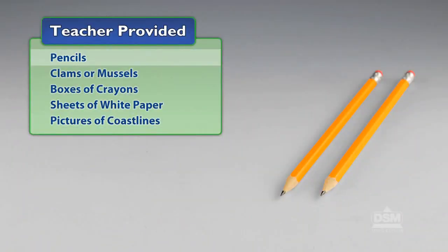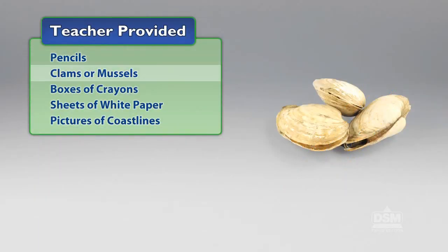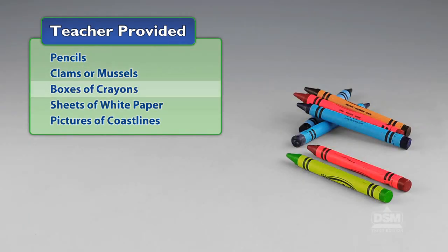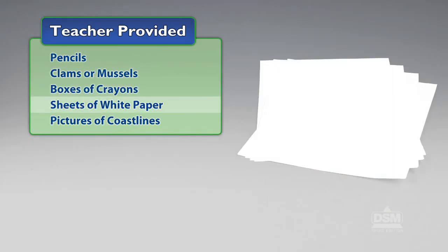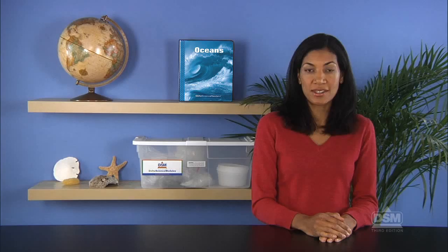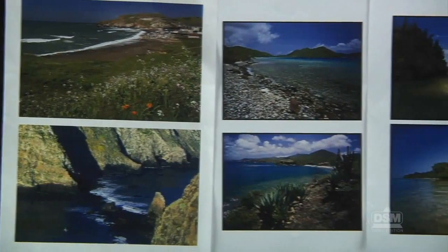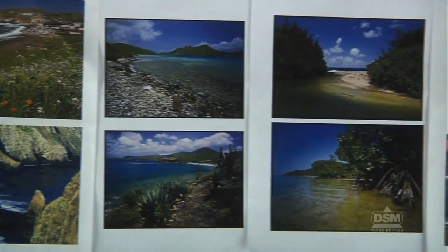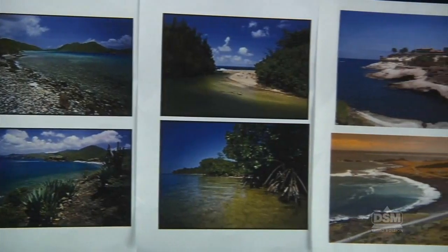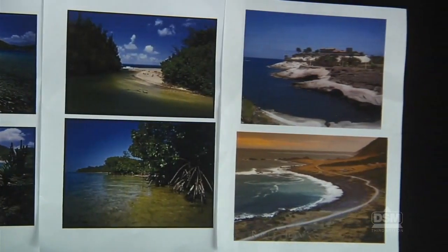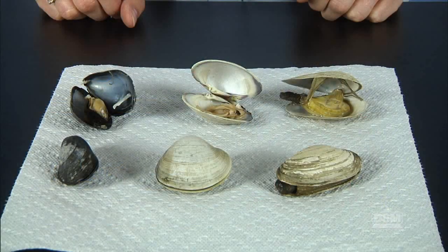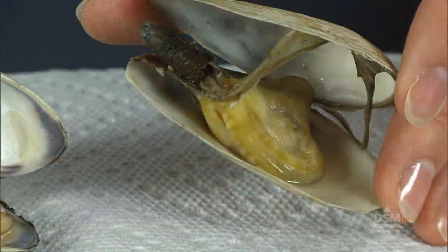You will also need to provide pencils, clams or mussels, boxes of crayons, sheets of white paper, and pictures of coastlines. To prepare for the activity, make a copy of Activity Sheet 11, Parts A and B, and the mollusk fact sheets for each student. Collect pictures of different types of seashores to show sandy, rocky, muddy, and marshy coastlines.